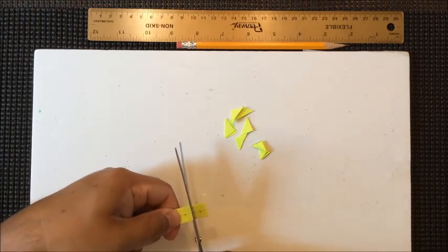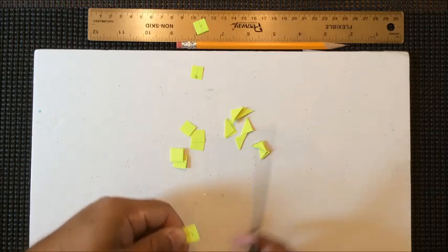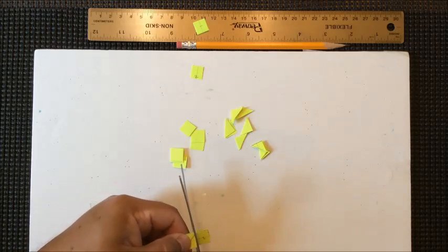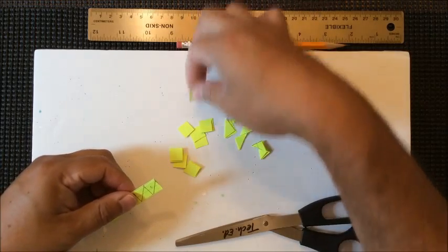So you continue cutting out your triangles and your squares so you have a pile of each. So I am going to just turn this around for time's sake and show you that I will then have my pile of triangles and my pile of squares and I can begin adding my gussets to my bridge.